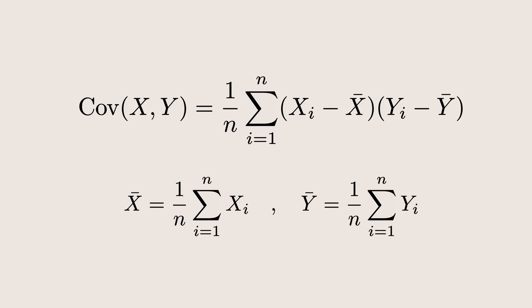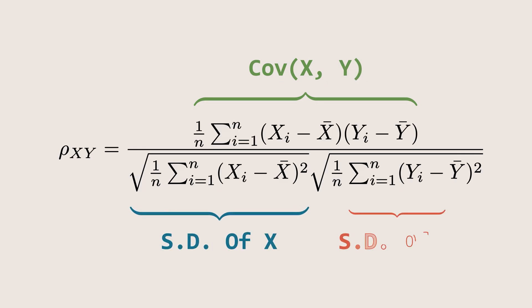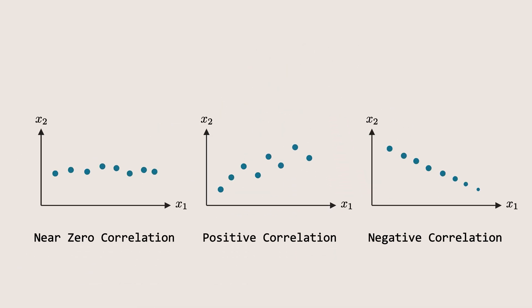However, covariance by itself can be hard to interpret because its value depends on the scale of the data. To make it more interpretable, we standardize it by dividing by the standard deviations of both features. This gives us the correlation coefficient, which always lie between minus 1 and plus 1.